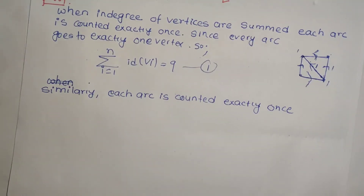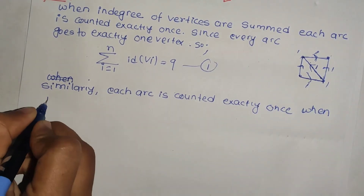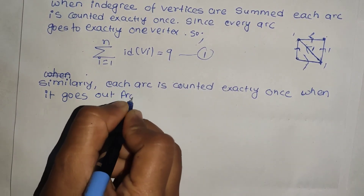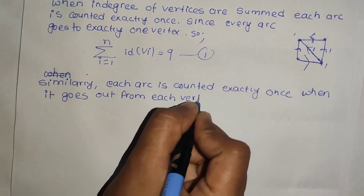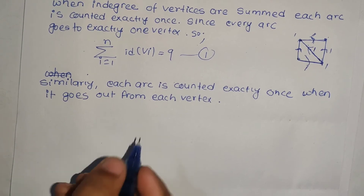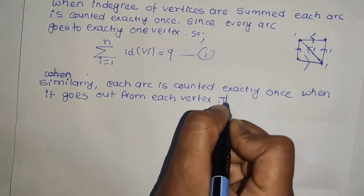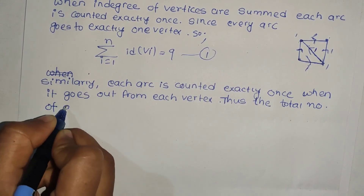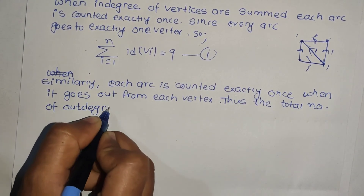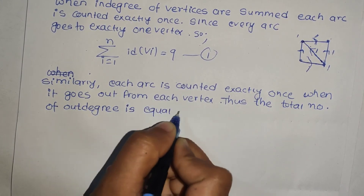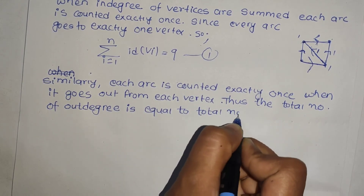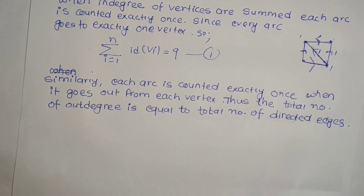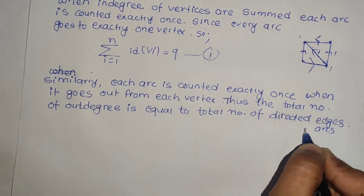For example, we have already used this, so this is the theorem material. When it goes out from each vertex, similarly each arc is counted exactly once. So it goes out from each vertex.